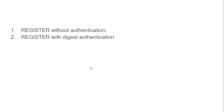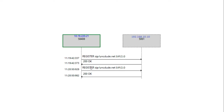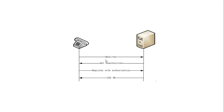For normal registration without authentication, the phone sends a REGISTER message with user ID and gets back a 200 OK, so it gets registered in the PBX. There is no authentication required in this flow — it just allows registration directly.